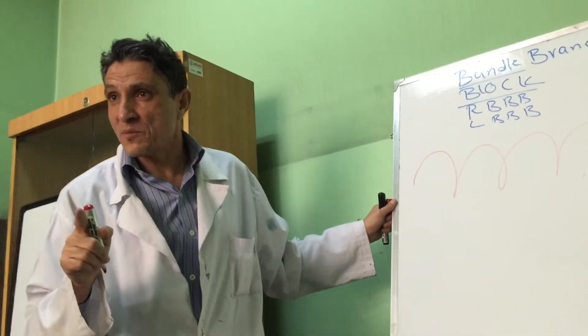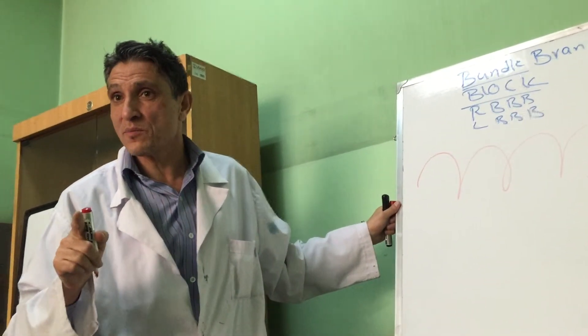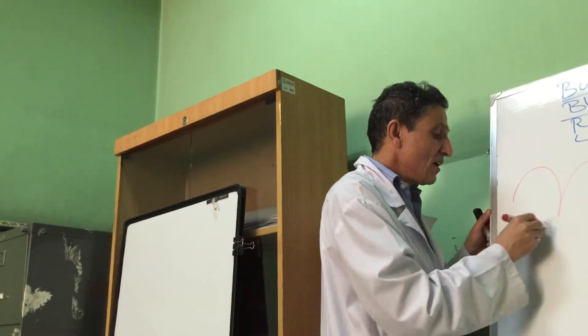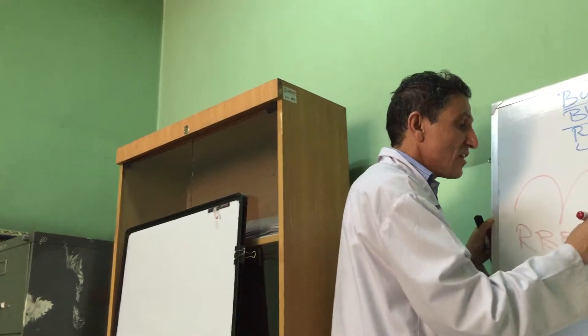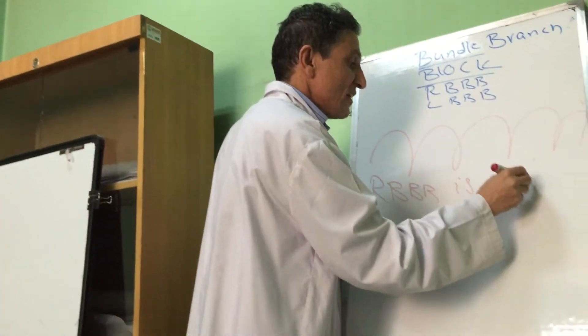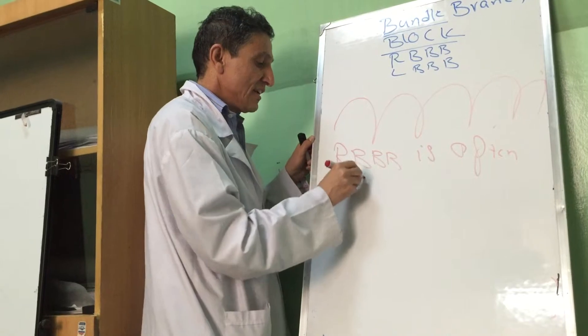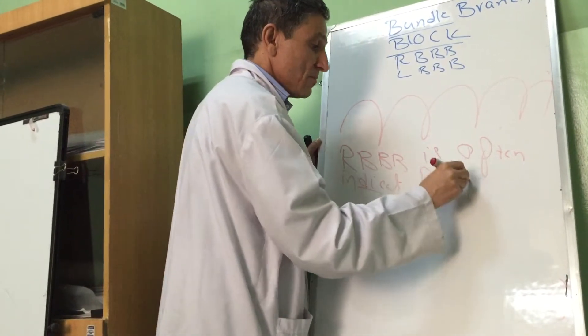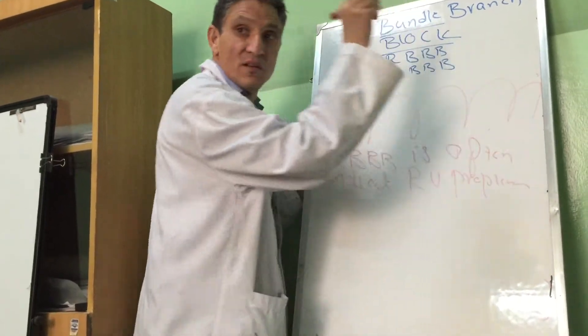Right bundle branch block is often an indication of a right ventricular problem.